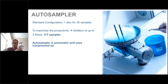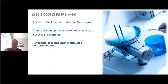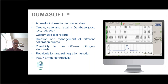The standard configuration includes one disc for 30 samples at a time for our autosampler, but you can add up to three additional discs for 117 samples total, and these can be added at any time after purchase. The autosampler is pneumatic and uses compressed air, so there are no concerns about electronic breakdowns. Our Dumasoft software runs the instrument, keeping all useful information — weights, sample types, and important data points — in one window.